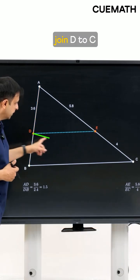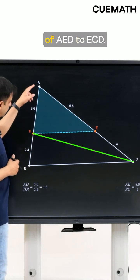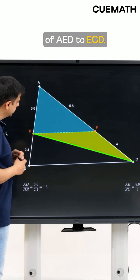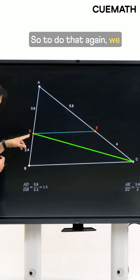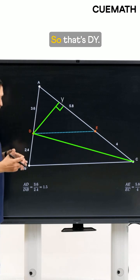Now similarly we join D to C and consider the areas of AED to ECD. So to do that again we drop a perpendicular from D to AC so that's DY.